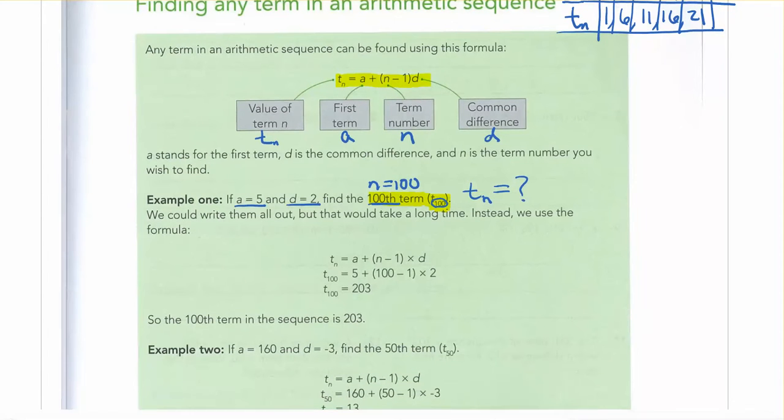So in one way, you could actually write out all the terms, starting off with 5 and going up by 2 each time, 7, 9, 11. But do that for 100 times, and it's going to get pretty tedious and awful to do. So we can use our formula.